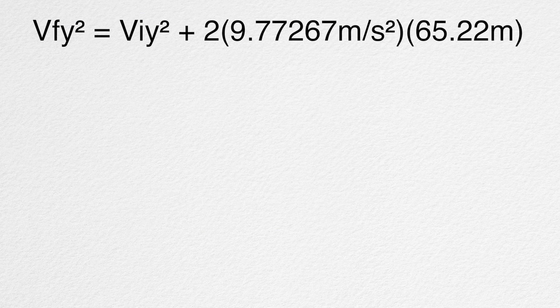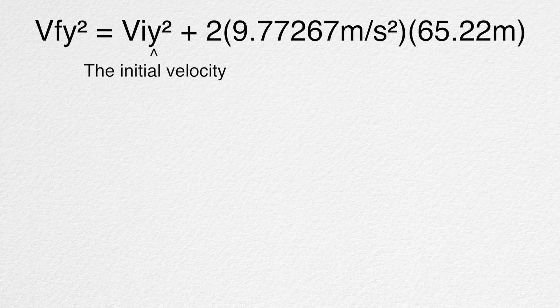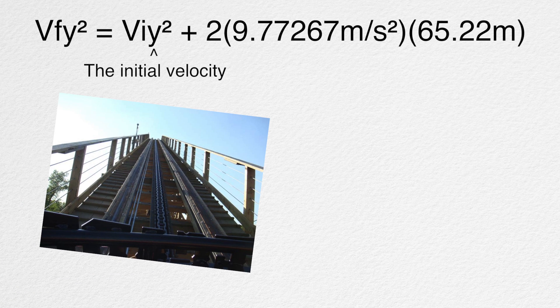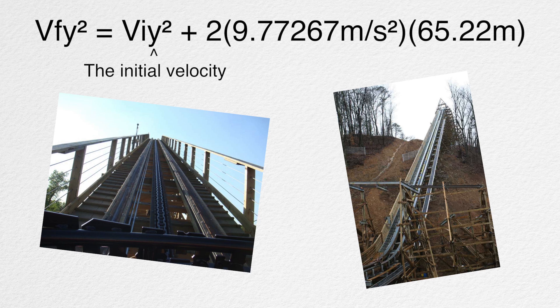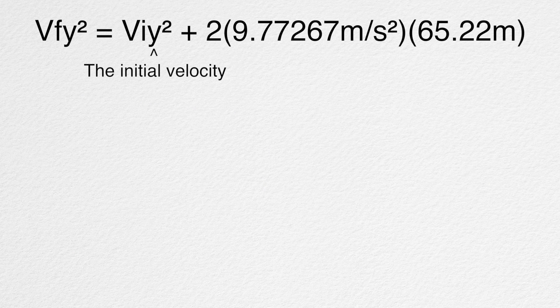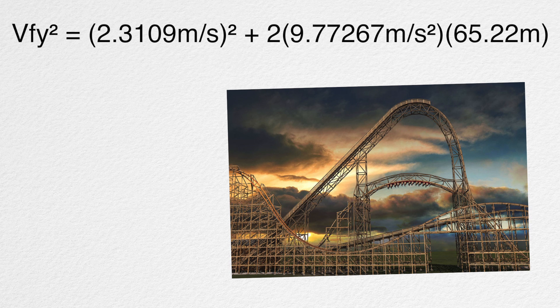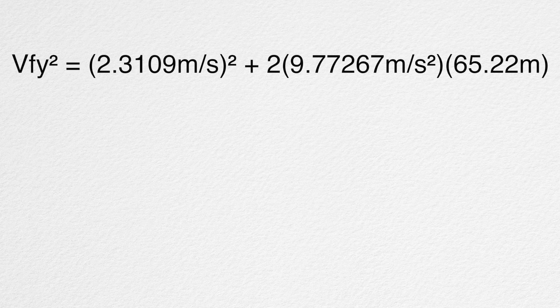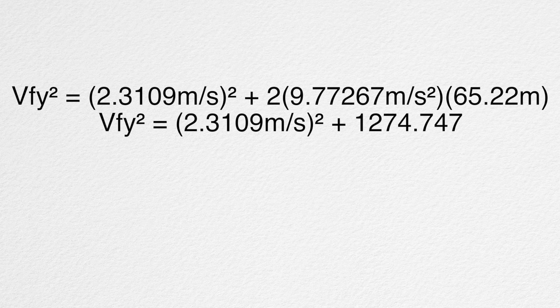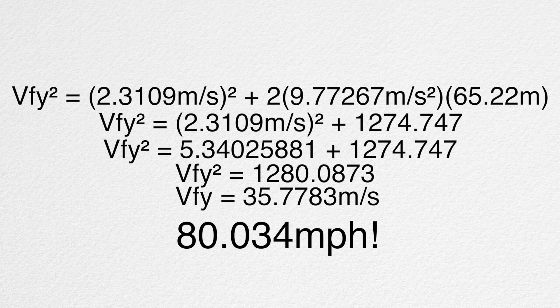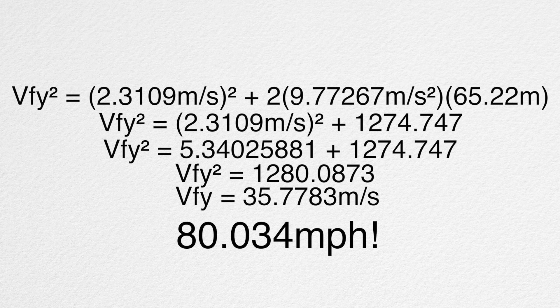Now we plug this into our original equation. The last variable needed is the initial velocity — the speed of the lift hill. Assuming a traditional chain lift and not a launch, we used Goliath's chain lift speed as a reference. We couldn't find this speed anywhere, so we had to calculate it ourselves. The lift hill speed came out to be 2.3109 meters per second. With all parts of the equation solved, RMC Mean Streak's top speed will be approximately 80.034 miles per hour.